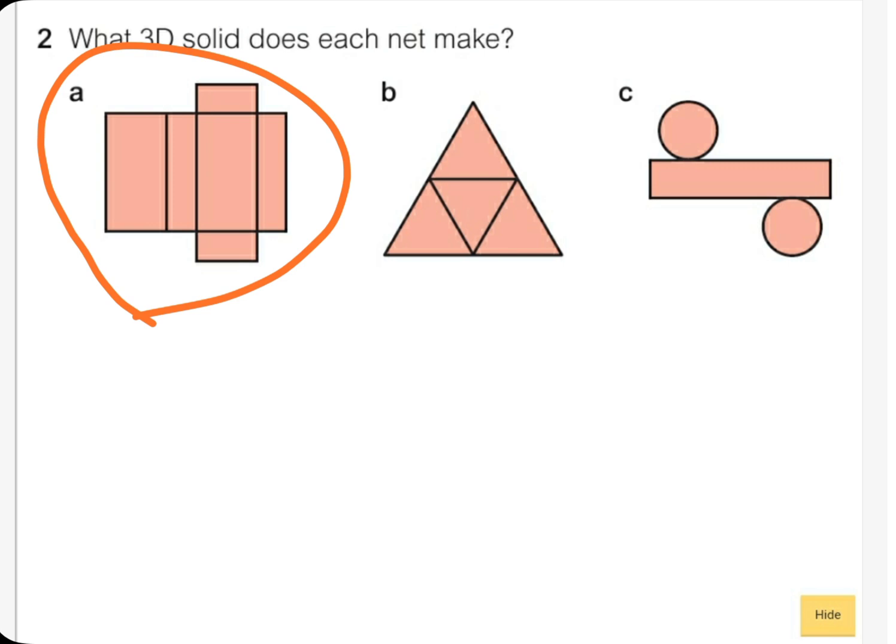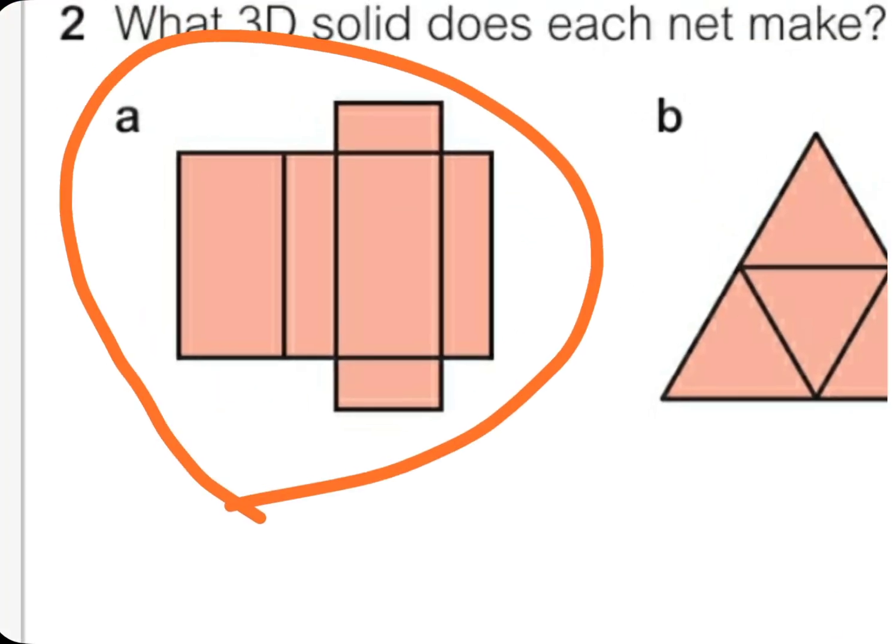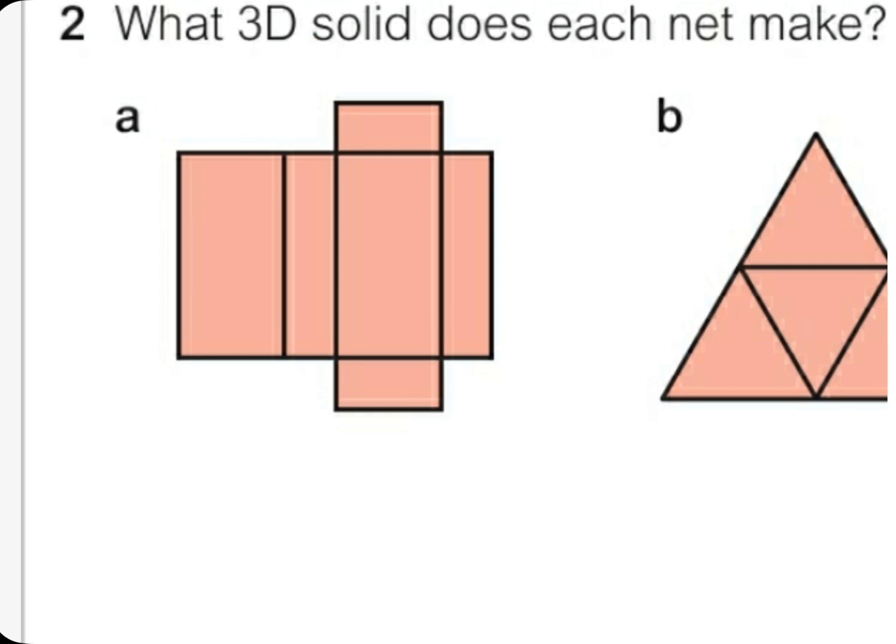We have one, two, three, four, and then five and six closing. Now we have six faces. So it looks like a box, but it's not a normal box because these faces are longer than these, as you can see.